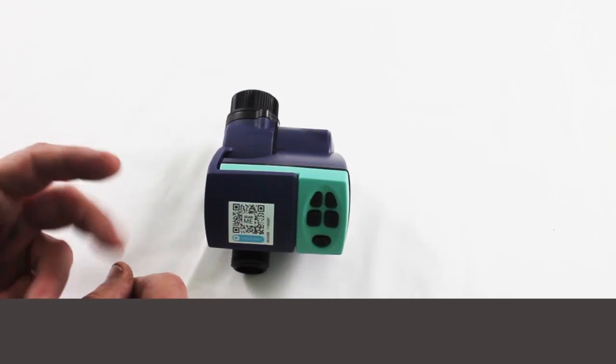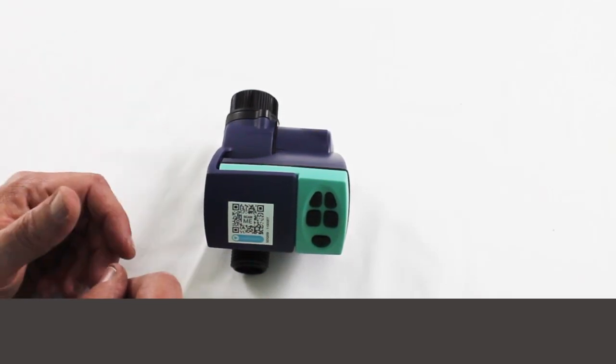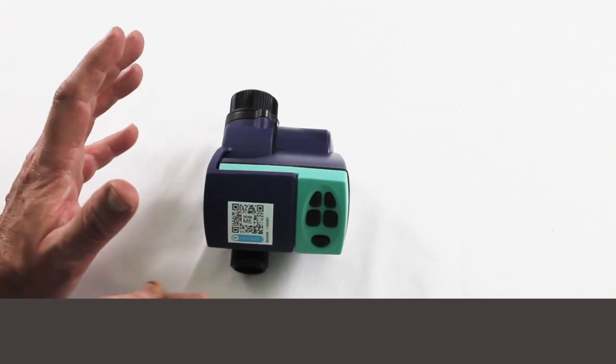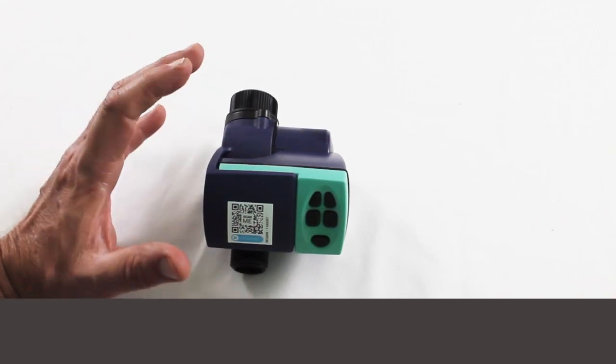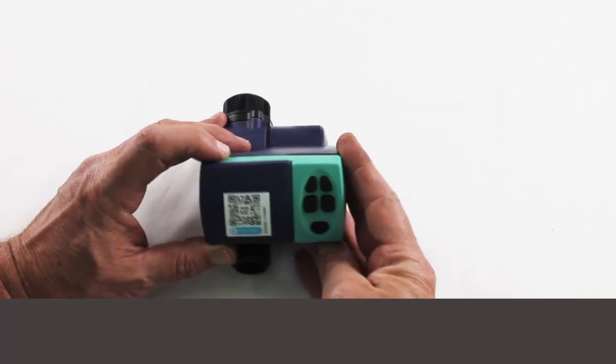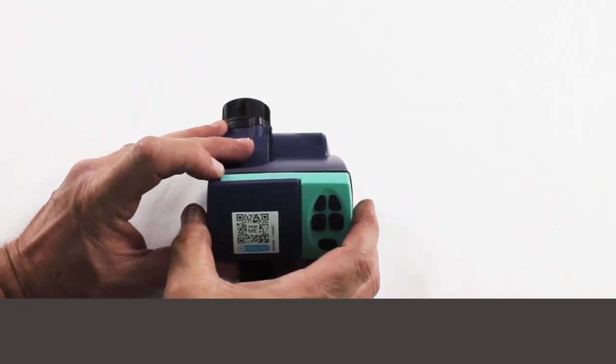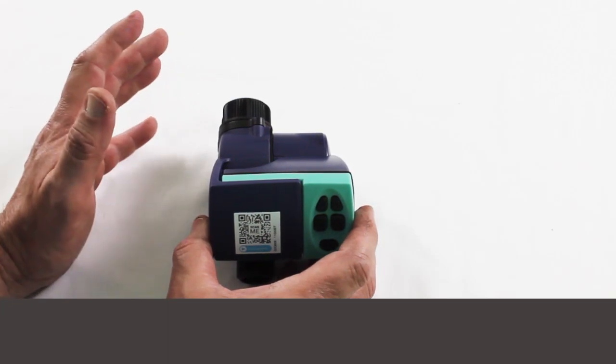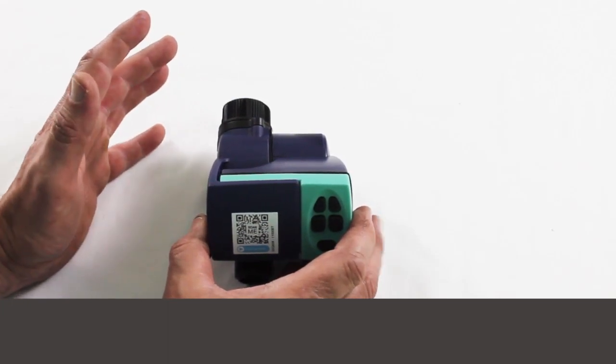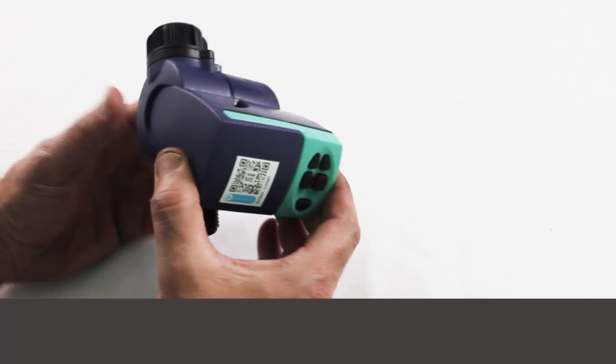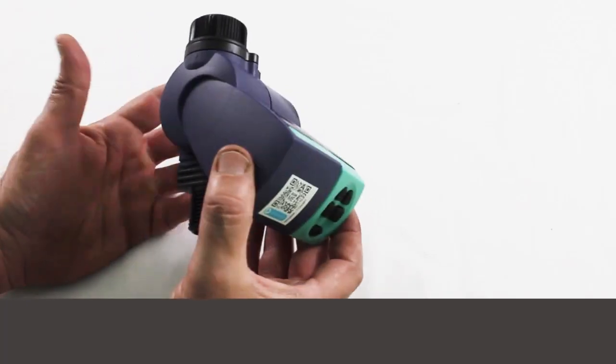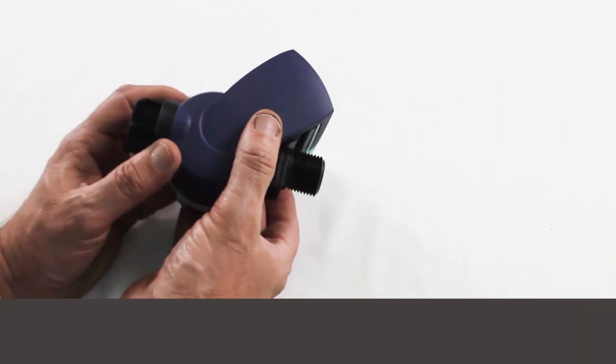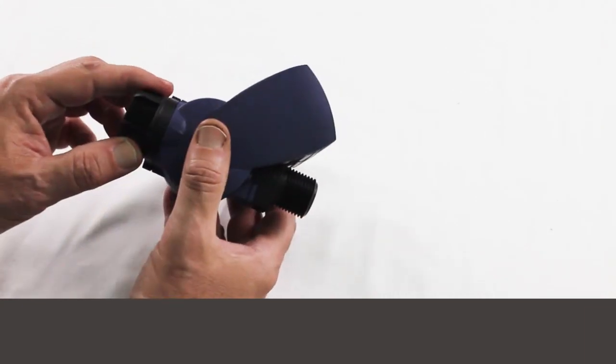We're going to go ahead and talk about the timer before we go outside and install it, just to ensure that I can get a good even shot of the display and make sure you understand what we're doing here. This is the Galkon 11000 BT Bluetooth Hose End Battery Operated Irrigation Controller. It's a one station, meaning we're going to only run one zone of irrigation with it, one zone of drip.